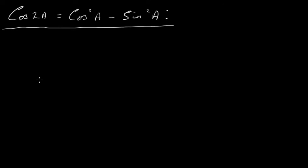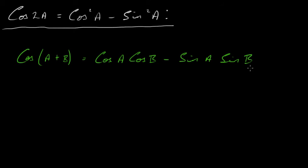So we're going to start off with a trigonometric equation that we looked at in a previous video, and that was cos of a plus b equals cos a times cos b minus sine a times sine b.